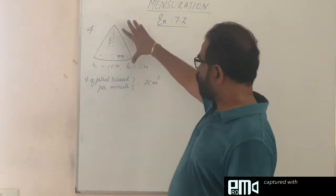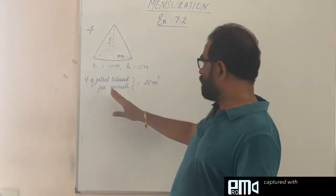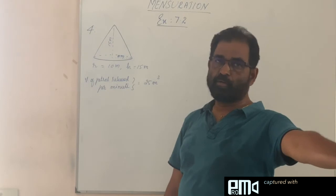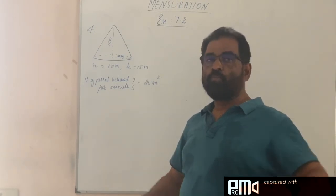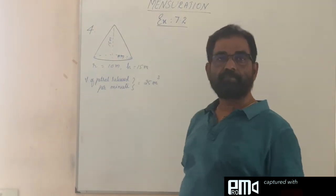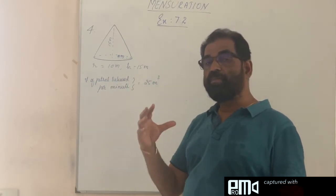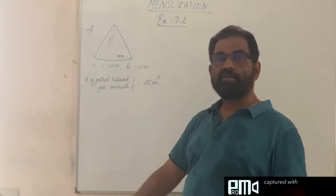You just divide the volume of the container by the volume of the petrol released per minute, in one minute how much amount of petrol is released. With that you divide, we will get the number of minutes, in how many minutes the vessel is emptied.